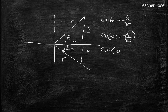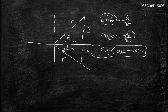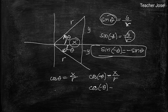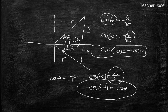Sine negative theta is equal to negative y over r. The value for y over r is sine theta, so therefore sine negative theta is equal to negative sine theta. The same with cosine — cosine theta in a positive angle gives us x over r. So cosine negative theta is equal to x over r still, because x is positive. Therefore cosine negative theta is equal to cosine theta.